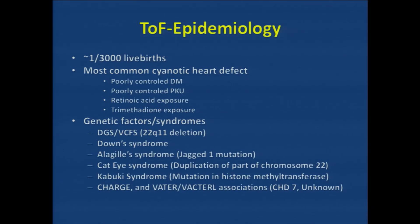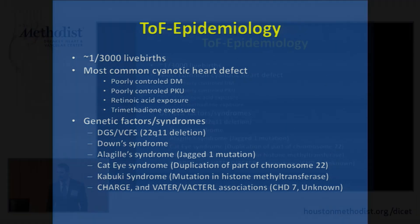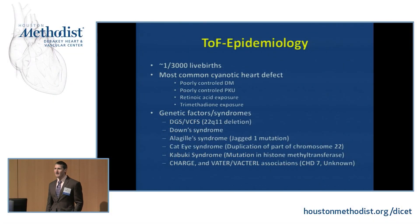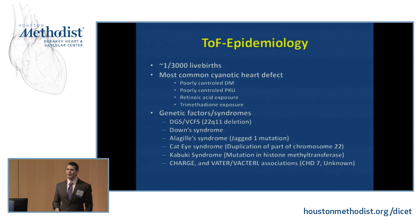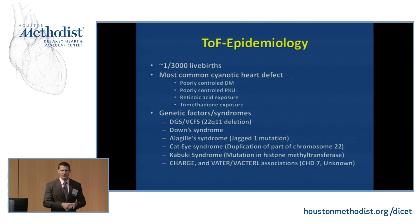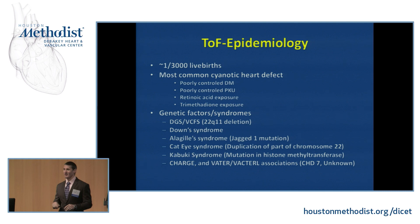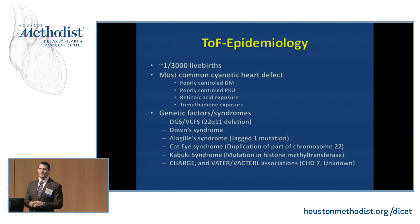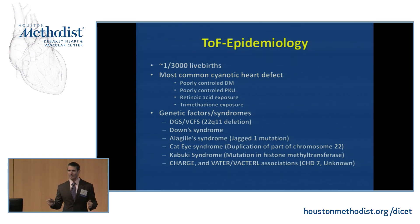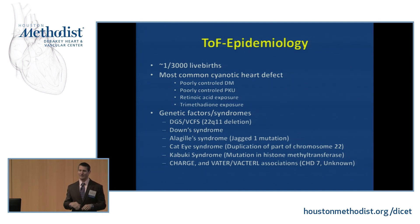Tetralogy of Fallot is the most common form of cyanotic congenital heart disease, about 1 in 3,000 live births. It is associated with certain maternal factors: poorly controlled diabetes, phenylketonuria, retinoic acid exposure, or exposure to trimethadione, which is an anti-epileptic. There are also certain fetal or offspring genetic features associated with Tetralogy of Fallot, the most common being a 22q11 deletion — which you heard about in a prior lecture — but also Down syndrome.